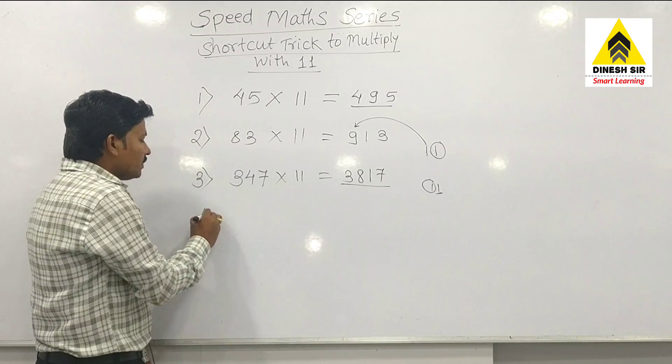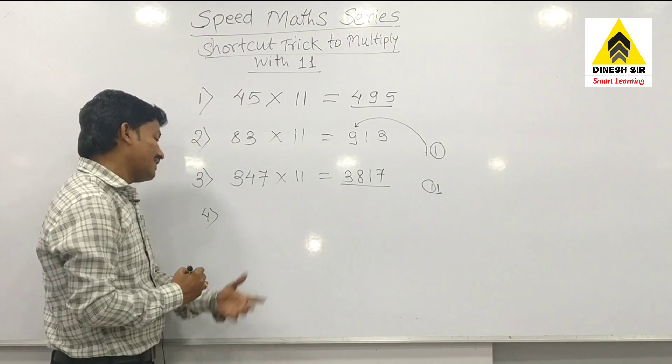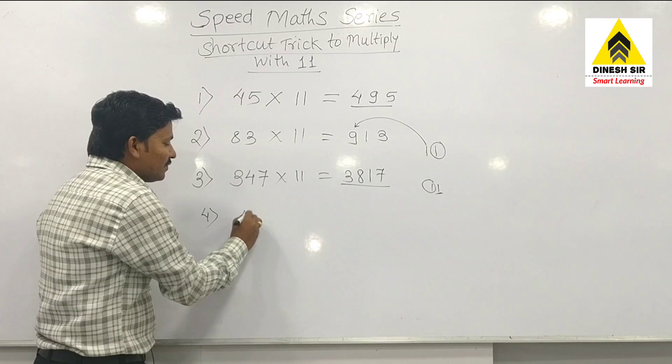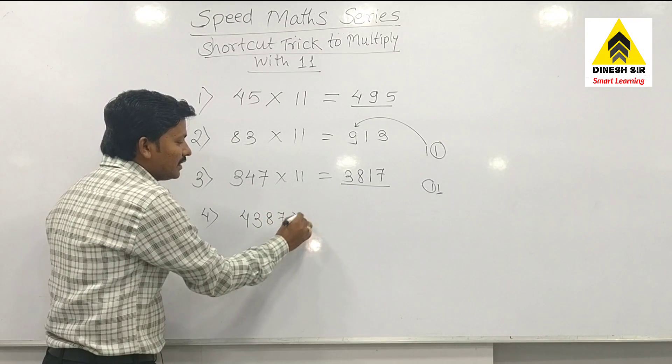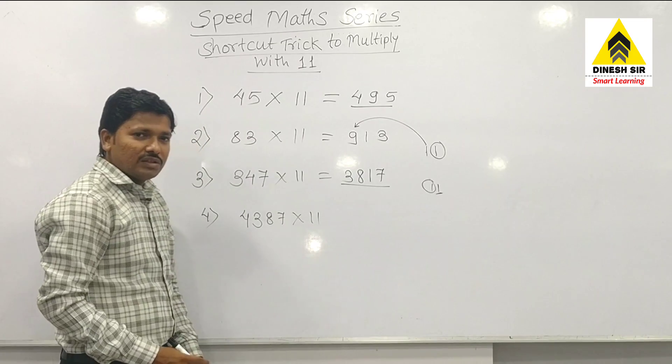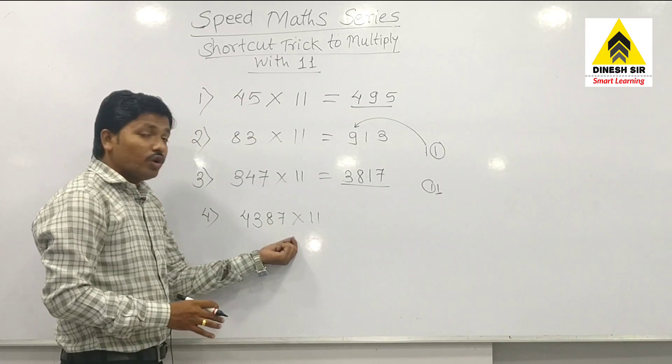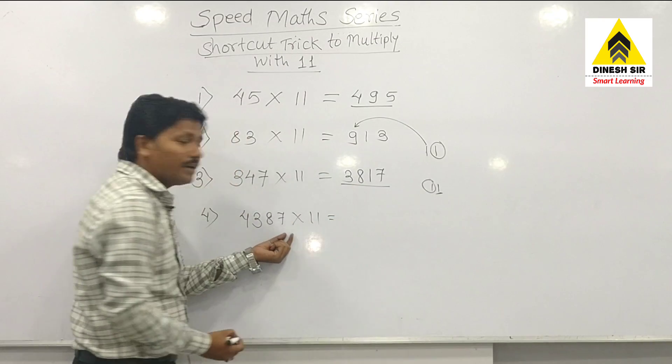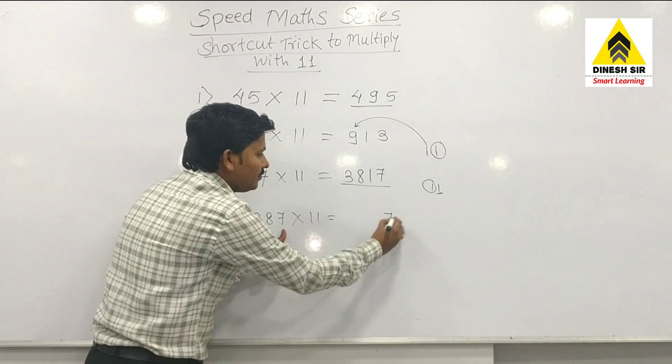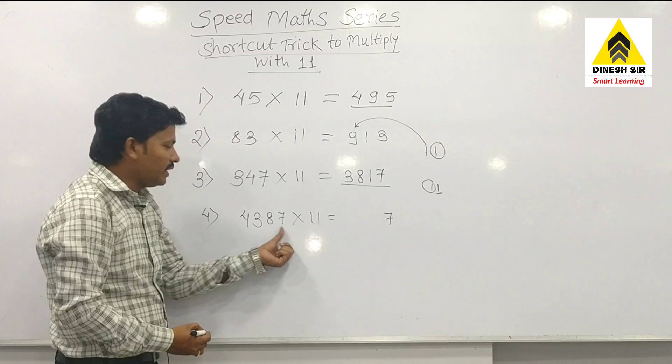If I take a 4-digit number, apply the same trick: 4387 multiplied with 11. You can apply this trick to any number. What we have to do: start from the last number, 7. Add the 7 to the previous number.